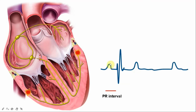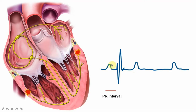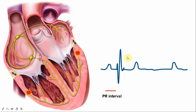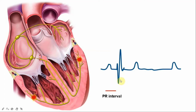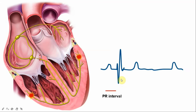One thing to remember: a positive deflection on the ECG means the cardiac impulse is passing towards the lead, while a negative deflection means the cardiac impulse is passing away from that particular lead.